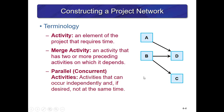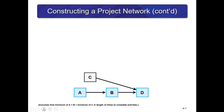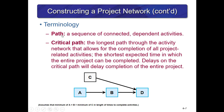In this example, D and C are not dependent on each other — they have no predecessor relationship — but they are both dependent on activity B. This is a continuation of that network diagram showing activity C feeding into D. The path is a sequence of connected and independent activities. The critical path is the longest path through the activity network that allows for the completion of all project-related activities — it's the path that takes the most time, which we'll figure out when we do the forward and backward pass through a network diagram.